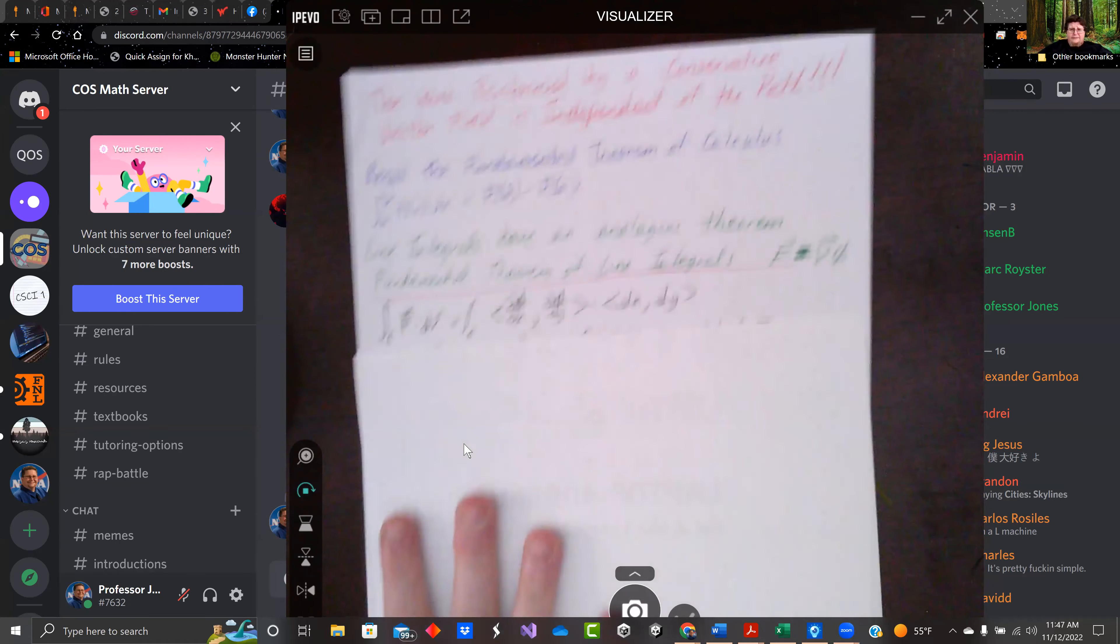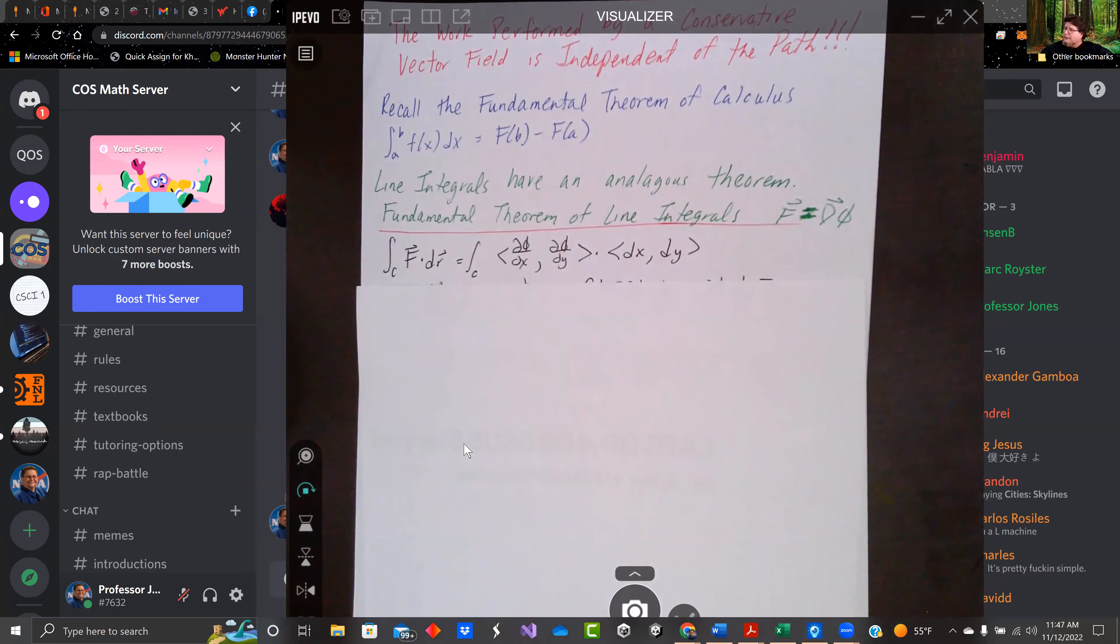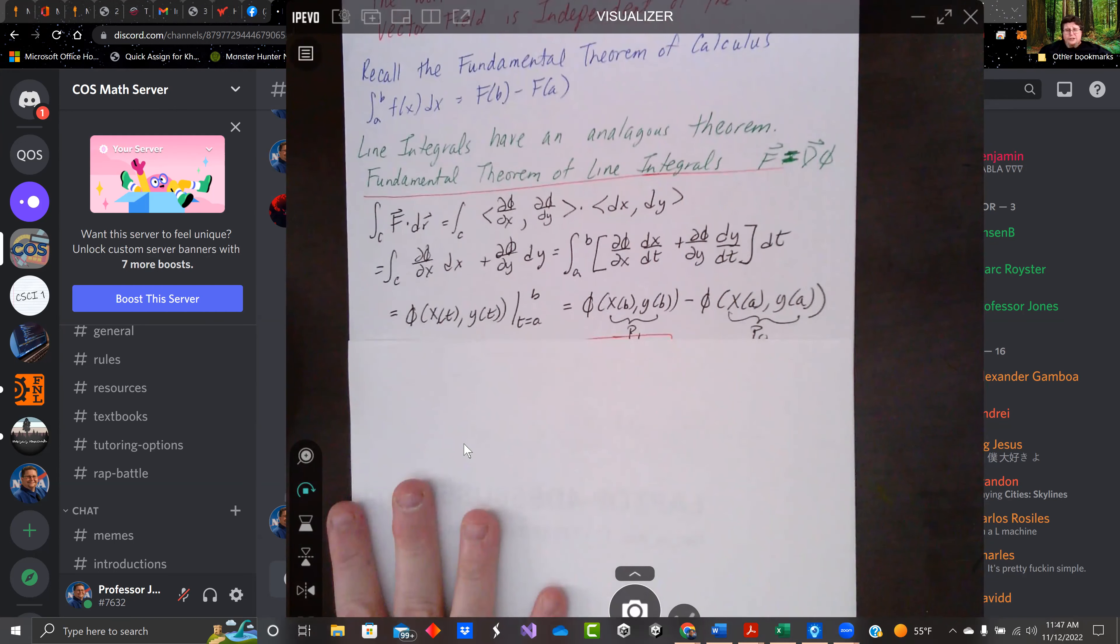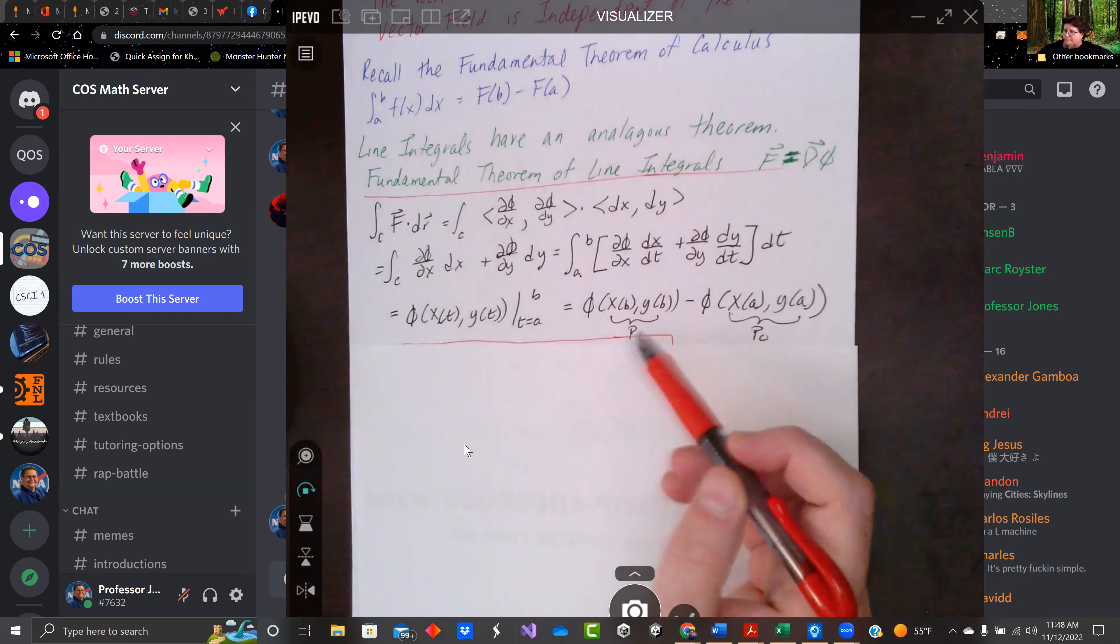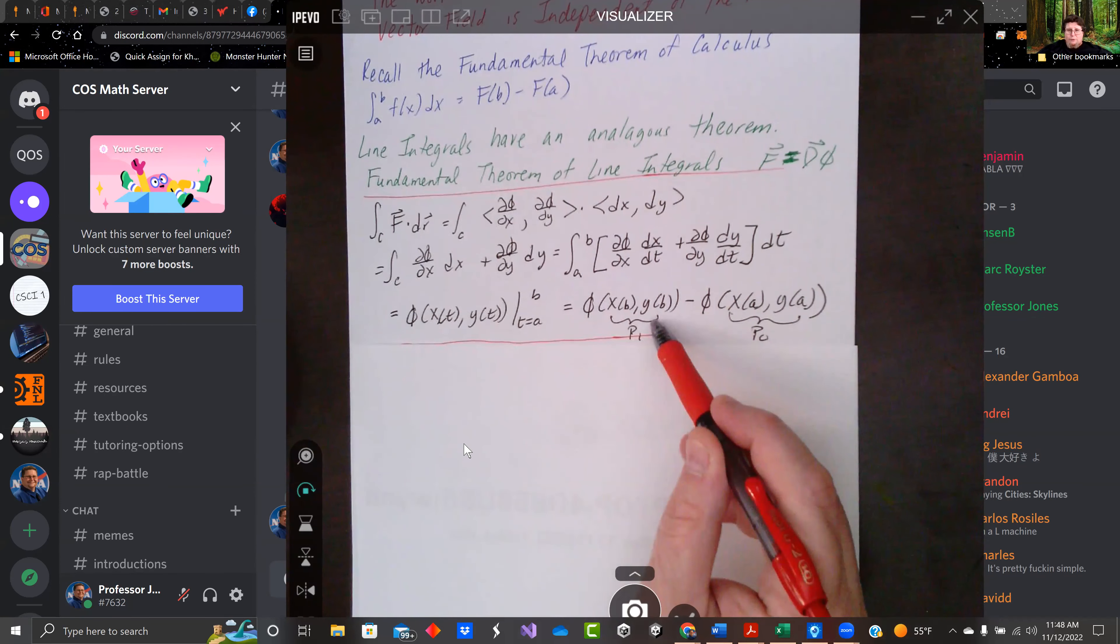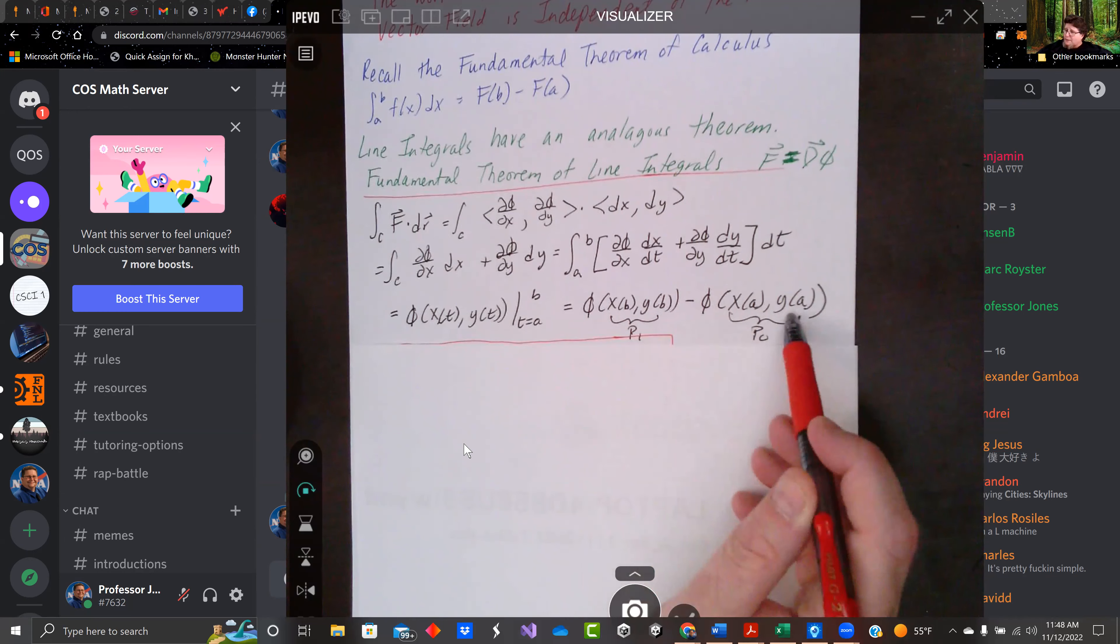We start with f dot dr. We see we got d phi dx, d phi dy, dot with dx dy. We write out what that means, d phi dx dx dt plus d phi dy dy dt times dt. That gives us the function phi from t equals a to t equals b. And when we plug that in, we got phi evaluated at b minus phi evaluated at a. b was a point. That's point p1. We call a p0.